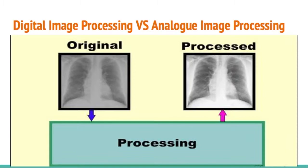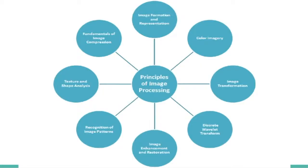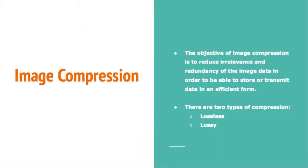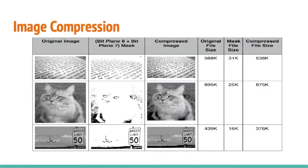Here is an example of digital image processing versus analog image processing. We can see that after the image is processed, it will be brighter than the original image. There are eight principles of image processing. Image compression — the objective of image compression is to reduce irrelevant and redundant image data in order to store or transmit data in an efficient form. There are two types: lossless compression and lossy compression.